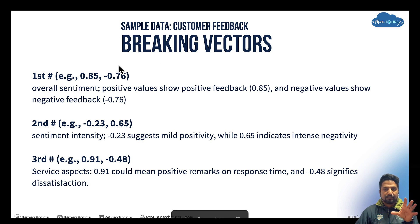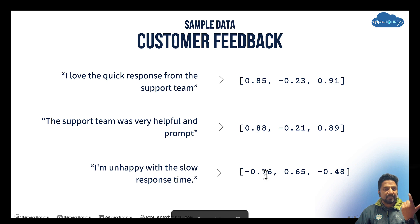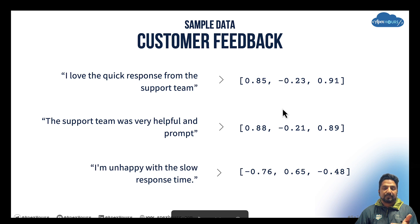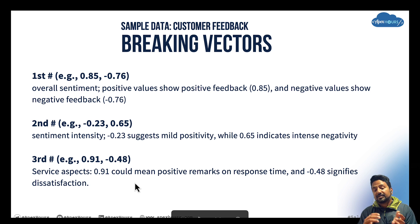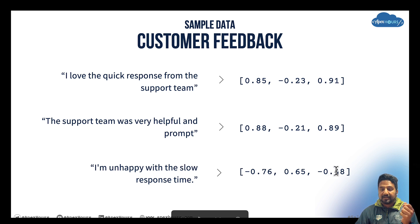If we break down the overall customer feedback vector, the first part represents overall sentiment — a positive value indicates positive feedback and a negative value indicates negative feedback. The second part captures intensity — how intense the sentiment is, with a highly negative value indicating strong dissatisfaction. The third part captures the service aspect — if there is a positive remark on response time, it will be on the higher positive side of the number, while a negative value like minus 48 signifies dissatisfaction with response time.